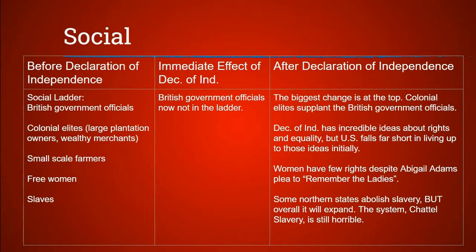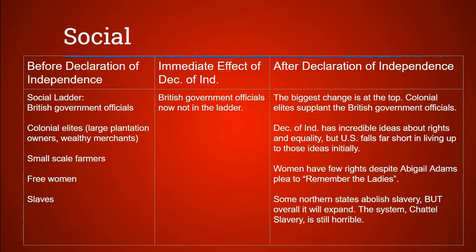Next, let's take a look at the social landscape. In this category, there are not a whole lot of changes. Before the Declaration of Independence, the social ladder looked like this: you had British officials on top, then colonial elites, which would include everyone from large plantation owners to wealthy merchants, then the vast majority of Americans who were small-scale subsistence farmers. Looking at specific social groups, free men are clearly at the top, with free women having few rights below them, and slaves of any gender at the bottom. The immediate effect of the Declaration of Independence was throwing the British officials off the ladder, and the colonial elites took their spot, but everyone else pretty much stayed the same.